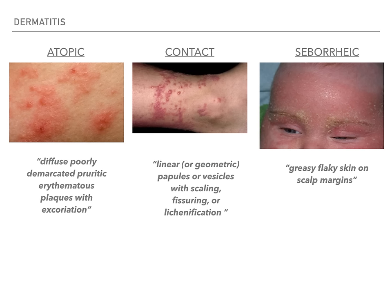Atopic dermatitis is described as diffuse, poorly demarcated, pruritic erythematous plaques with excoriation — basically widespread and itchy red plaques that don't look like anything specific. Contact dermatitis has a linear or geometric papular or vesicular pattern with scaling, fissuring, or lichenification. It's a hypersensitivity reaction where the rash follows the geometric shape of whatever touched the skin — a leaf, a necklace — the skin only erupts where the item touched.